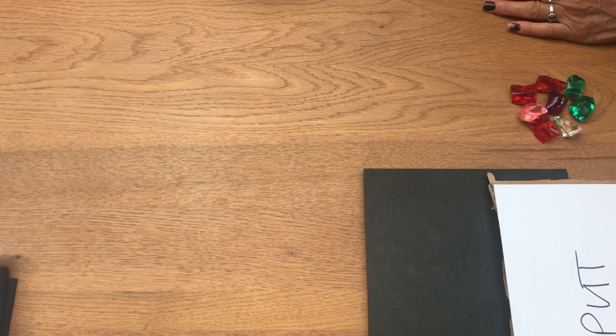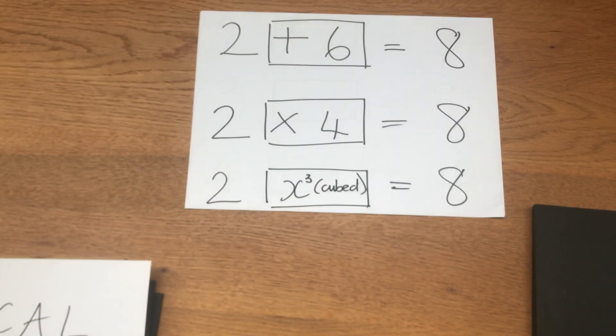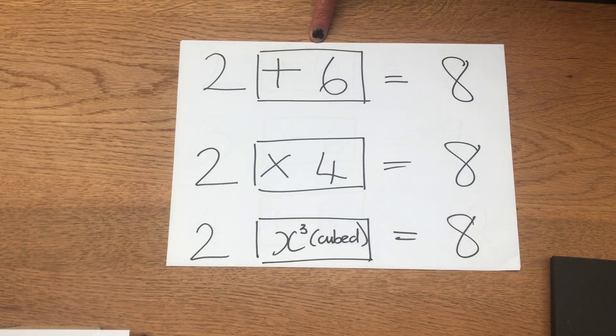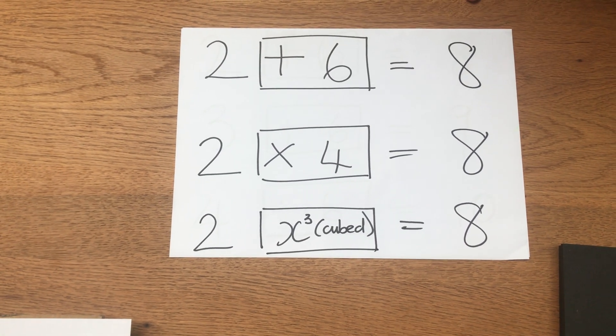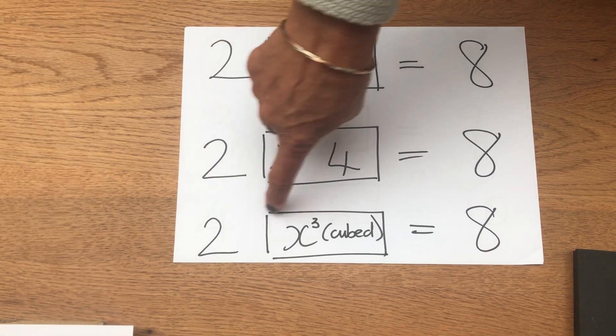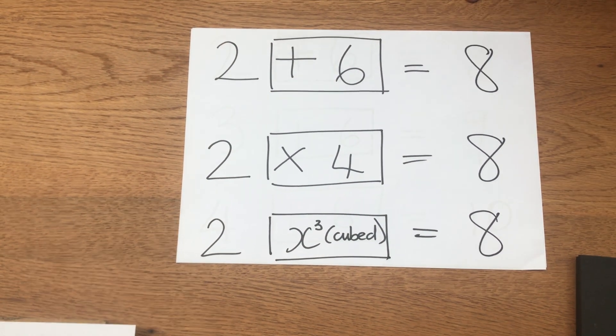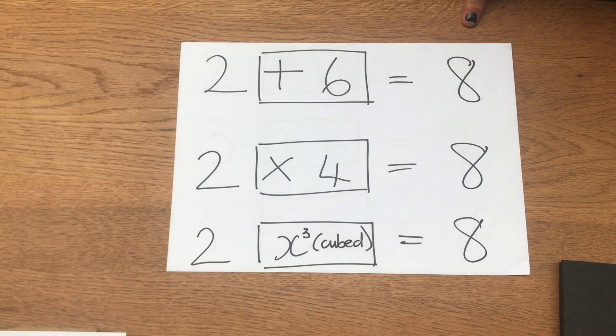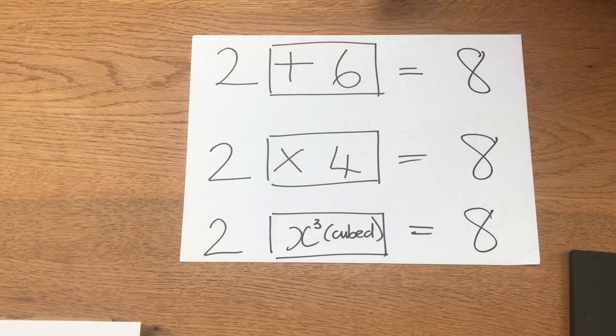Now there are various options that I think you might be coming up with. It could be an add six machine, it could be a multiply by four machine, or it could be a machine that cubes whatever goes in there. All of which gives me an answer of eight when my input is two.